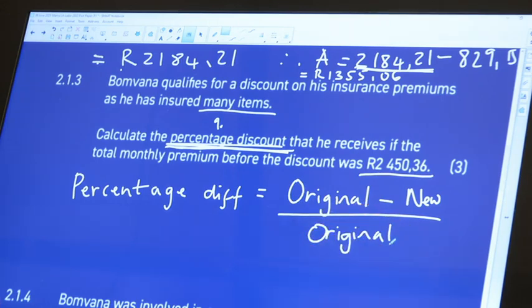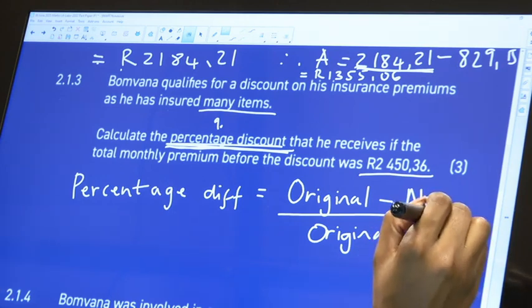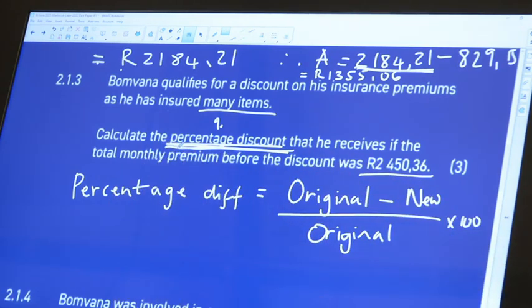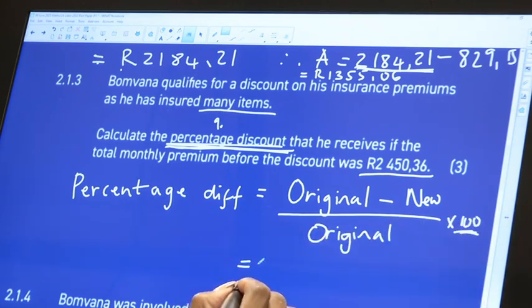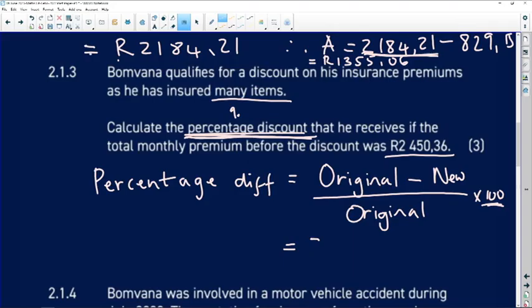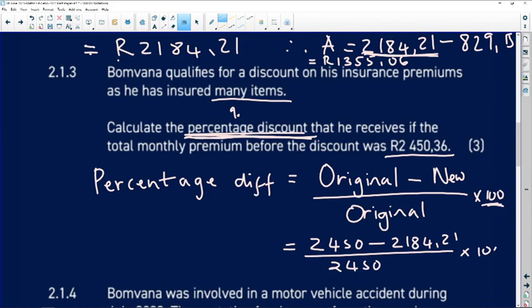The original amount is R2,450 minus R2,184.21, all over R2,450, and we need to multiply that by 100. Let's calculate this as a fraction.